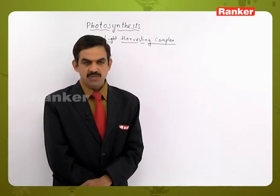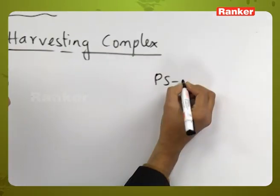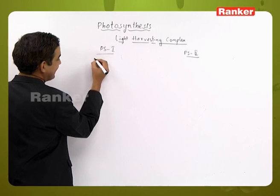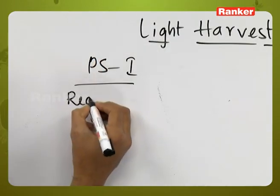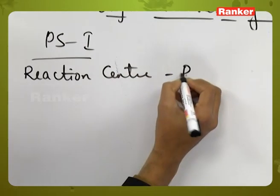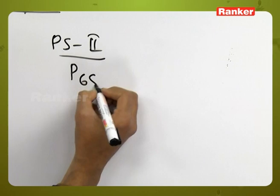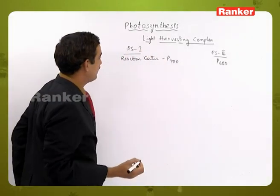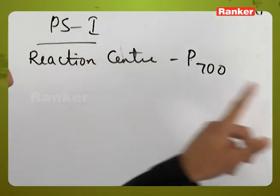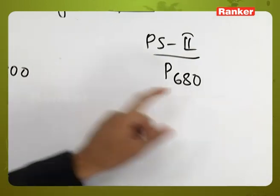Looking at the differences between photosystem 1 and photosystem 2: in photosystem 1 the reaction center is P700, where the maximum absorption of light takes place at 700 nanometers of wavelength. In photosystem 2 the reaction center is P680, where the maximum absorption of light takes place at 680 nanometers of wavelength.